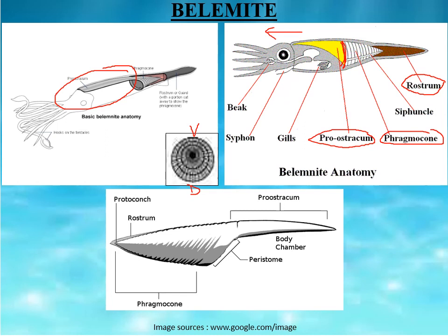In the fossil record, the most commonly preserved part of belemnites is the rostrum or guard. The proostracum and alveolus are most commonly broken and destroyed during fossilization. Only the rostrum is most commonly found; the alveolus is found less commonly, while preservation of the phragmocone and proostracum is very rare.